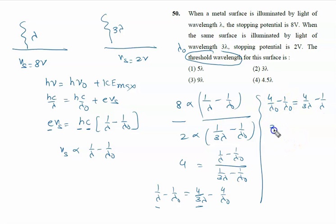4 minus 1, 3 upon lambda node equal to 4 minus 3, that is 1 upon 3 lambda. So lambda node is written as 9 lambda.